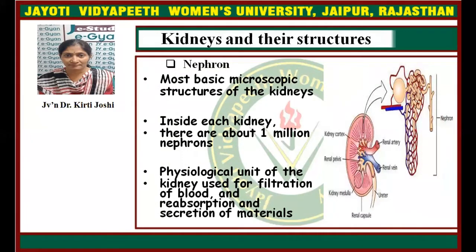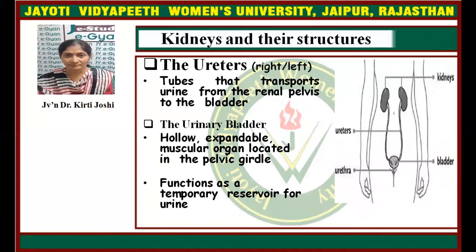The nephron is the basic microscopic structure of the kidney. Inside each kidney there are about 1 million nephrons. The physiology of the kidney involves filtration of blood and reabsorption and secretion of materials. The ureters — right and left — are tubes that transport urine from the renal pelvis to the bladder. The urinary bladder is a hollow, expandable muscular organ located in the pelvic girdle that functions as a temporary reservoir for urine.